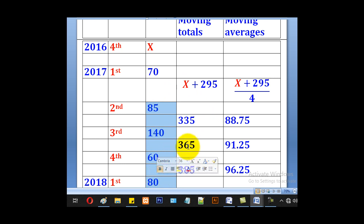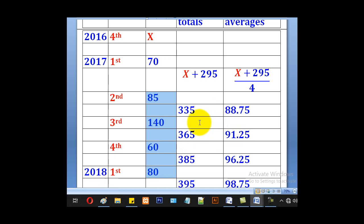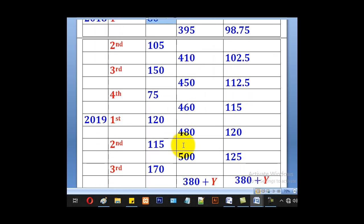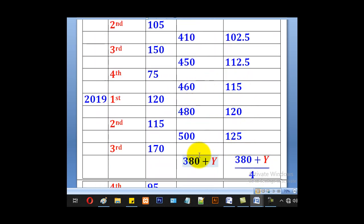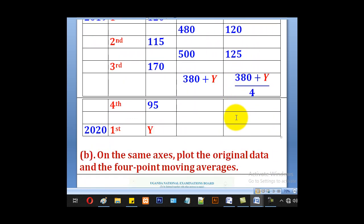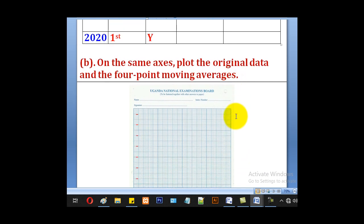Its total will be 335 and its average will be 91.25. So you do the same for the rest and come up with those columns of moving totals and the moving averages.